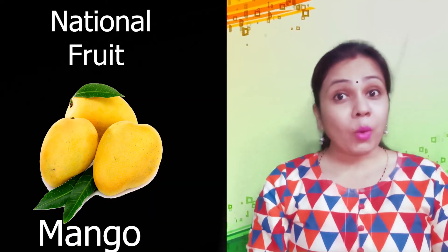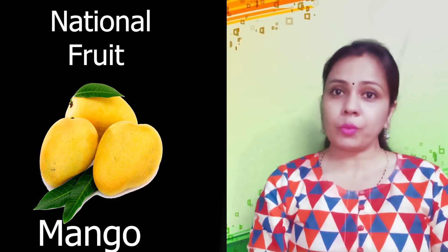Which is our national anthem? Jana Gana Mana is our national anthem. And which is our national animal? Royal Bengal Tiger is our national animal. Which is our national bird? Peacock is our national bird. Which is our national flower, children? Lotus is our national flower. Which is our national fruit? Mango is our national fruit. And which is our national tree? The banyan tree is our national tree.